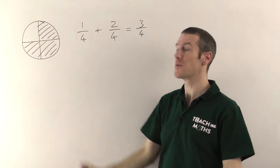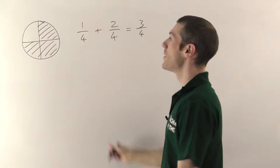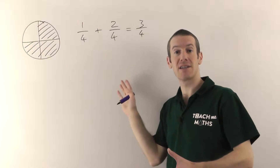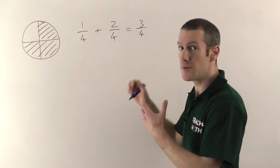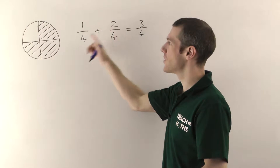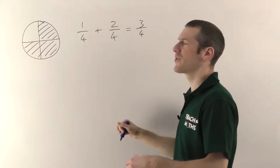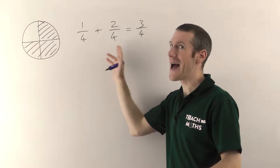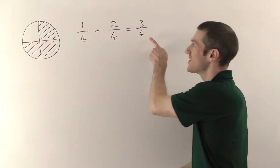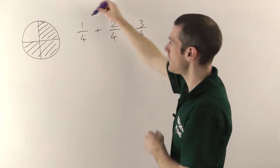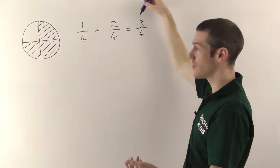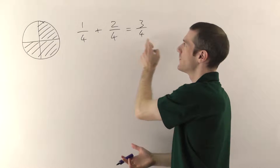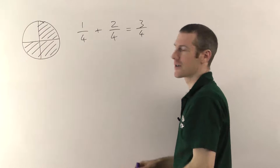This illustrates a common misconception when it comes to adding and subtracting fractions. When you multiply fractions, you multiply the tops and multiply the bottoms, so a lot of people think when adding fractions you add the tops and add the bottoms. But that's not happening here. We do add the tops — one plus two gives three — but we're not adding the bottoms. It's not four plus four to give eight. That's not going to work.